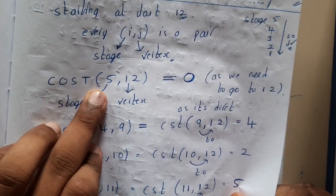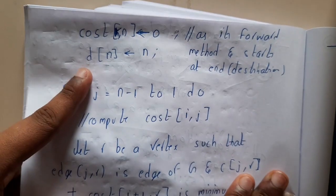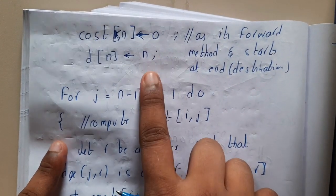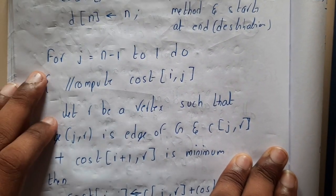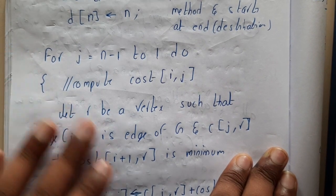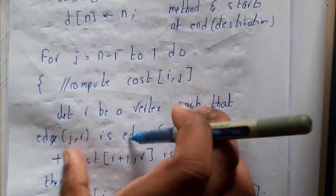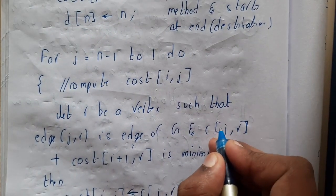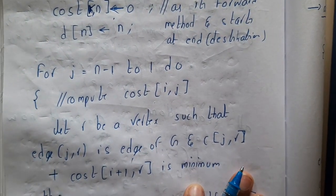Initially you start by initializing cost(K, N), that is the last element. We initiated the value as 0 — for example, cost of stage 5, vertex 12 is initiated with 0. We are also initializing the distance D with N, so the last vertex 12 is written at that position. After that, you perform a process from the last node to the first node: calculating the cost of each and every node and storing it in the array CST.